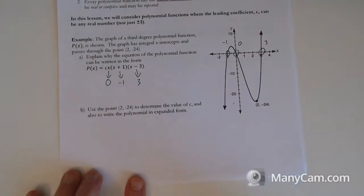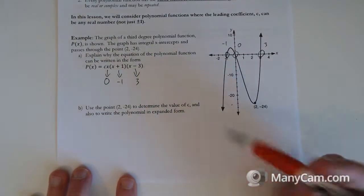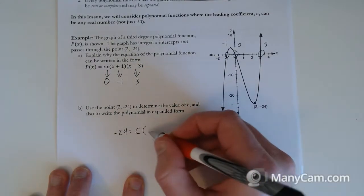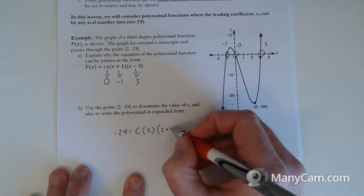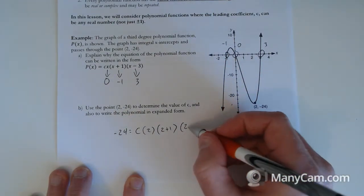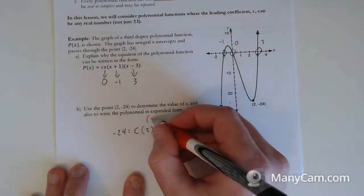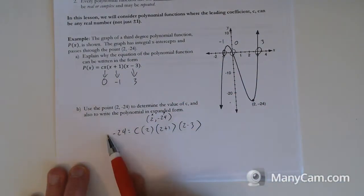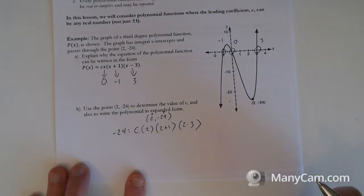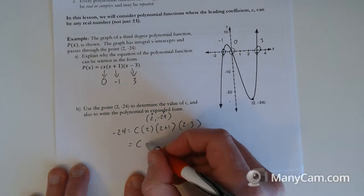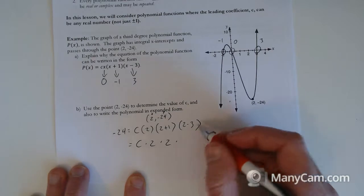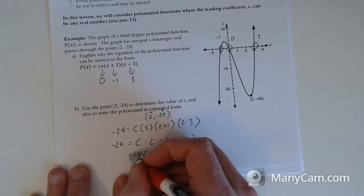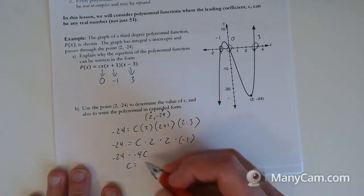Use the point to determine the value of c. So we already have started the equation based on all the roots. Now we just need to sub in our point and solve. So we're going to say negative 24 is equal to c times 2 times 2 plus 1 times 2 minus 3. So just subbing in the point 2, negative 24 for x and y. So the negative 24 went to the front, and the 2 goes in all the brackets.